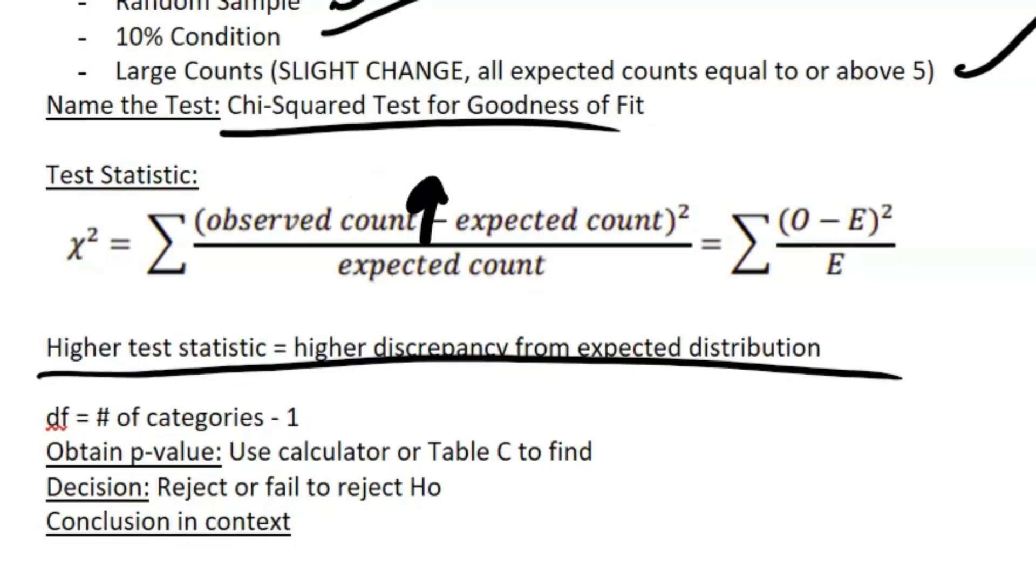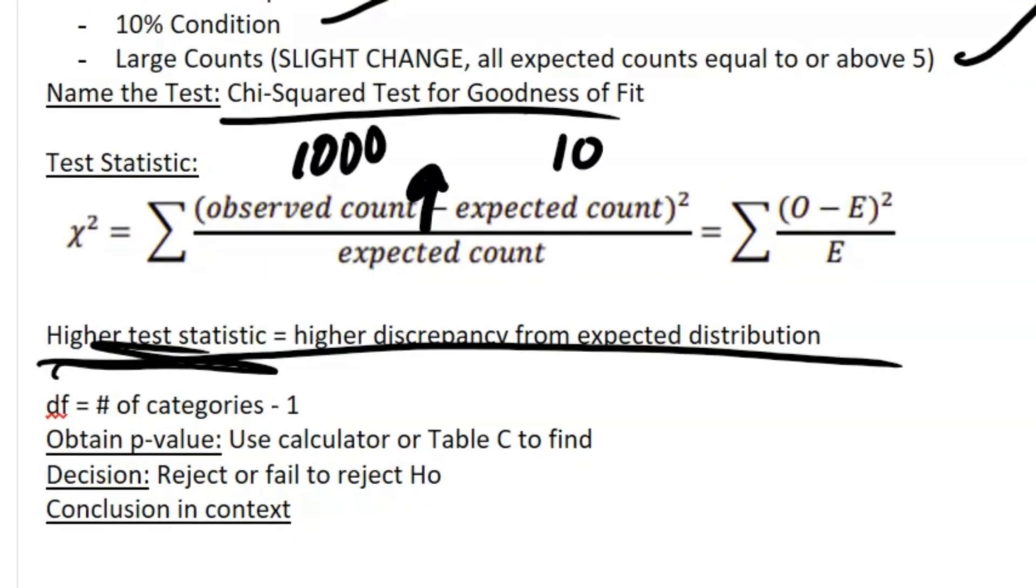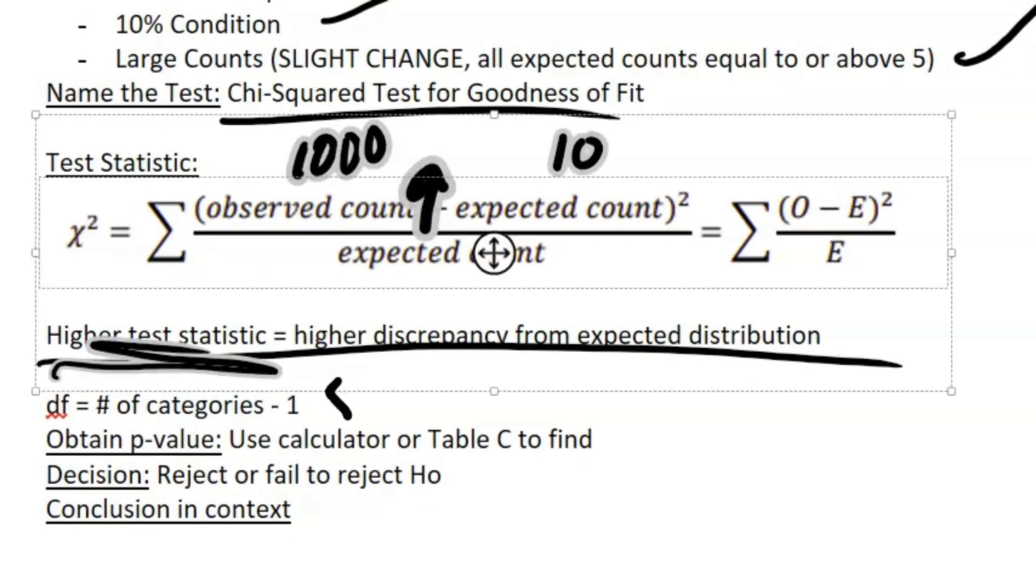If your observed value is very high—so that means, like, I'm expecting a value of like 10 but I get like 1000—then my difference will be super large, that gets squared. So a higher test statistic means there's higher discrepancy. If I'm talking in terms of M&Ms, then the M&M people are probably not telling the truth; there's a huge discrepancy.